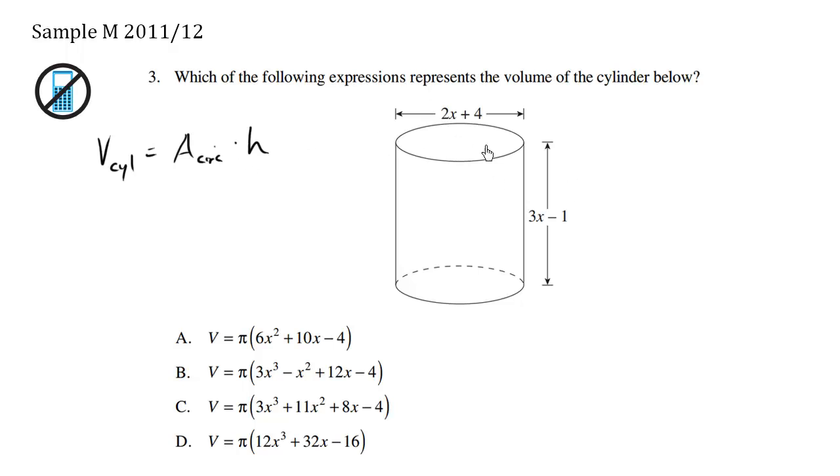Now we know the area of the circle. Area of the circle is going to be πr², so this here is going to be πr², and the height is the height. What is r? The radius is going to be from the middle to the side, which is exactly one half of 2x + 4.